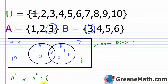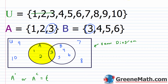Going back to the Venn diagram, I can quickly see that if this is set A, everything inside the circle is A, and everything outside of that circle is the complement of A. So it's very quick to see that it's 4, 5, 6, 7, 8, 9, and 10. Very easy to get that information.